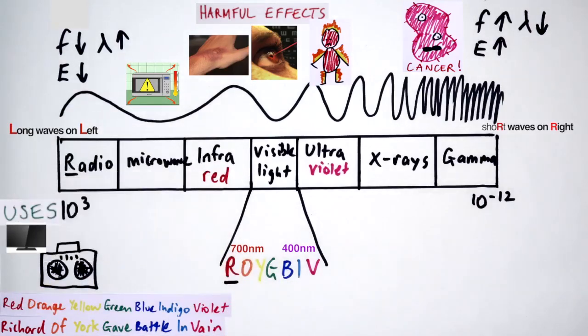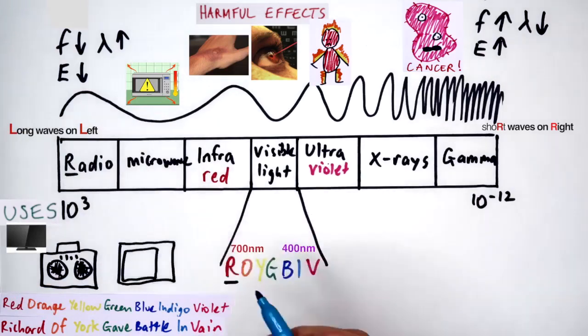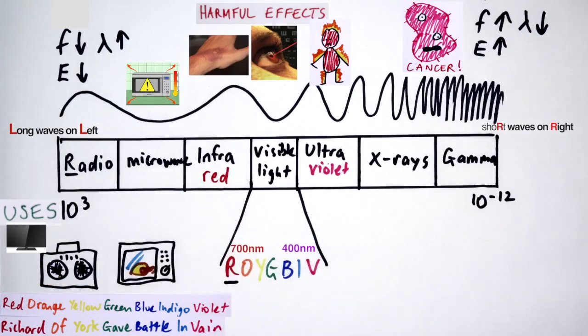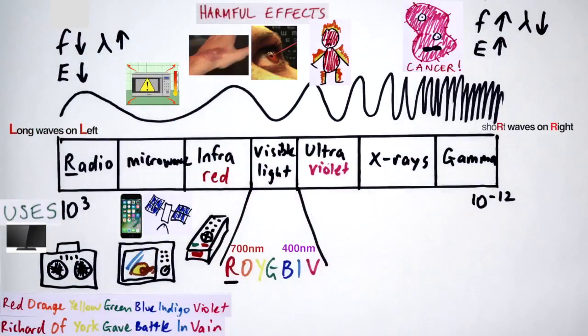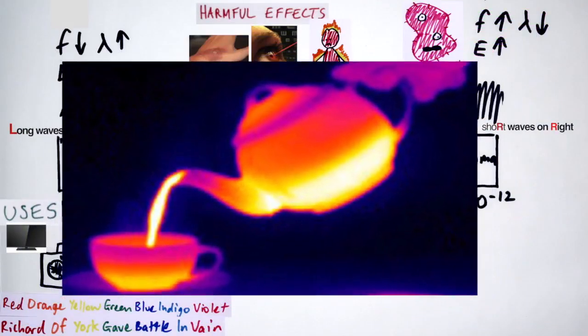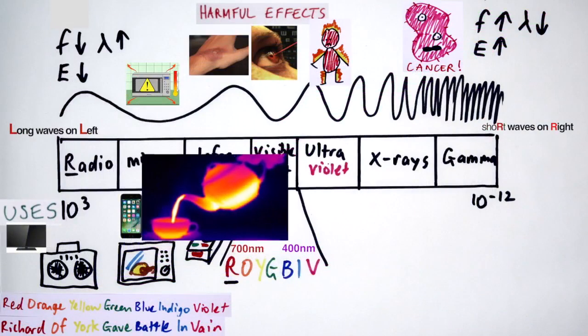Radio waves can be used for TV and radio. Microwaves can be used for cooking, mobile phones and communicating with satellites. Infrared waves can be used for remote controls, cooking, infrared cameras, detecting people's heat patterns in the dark.